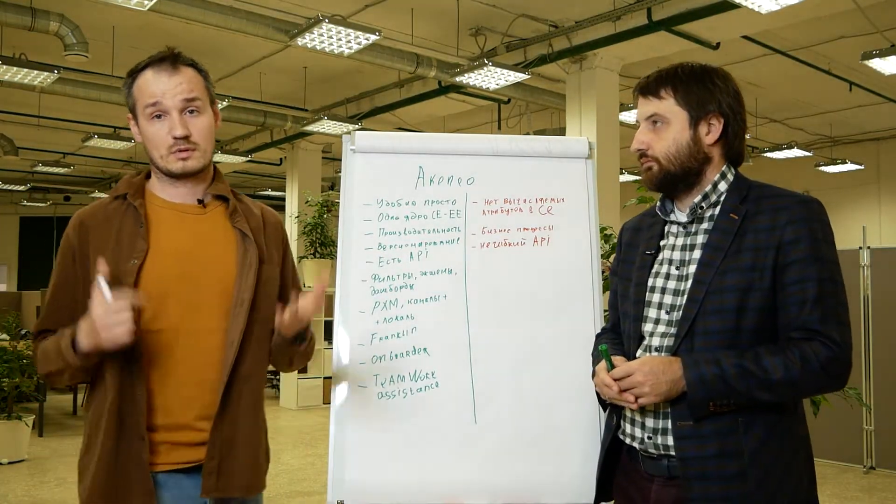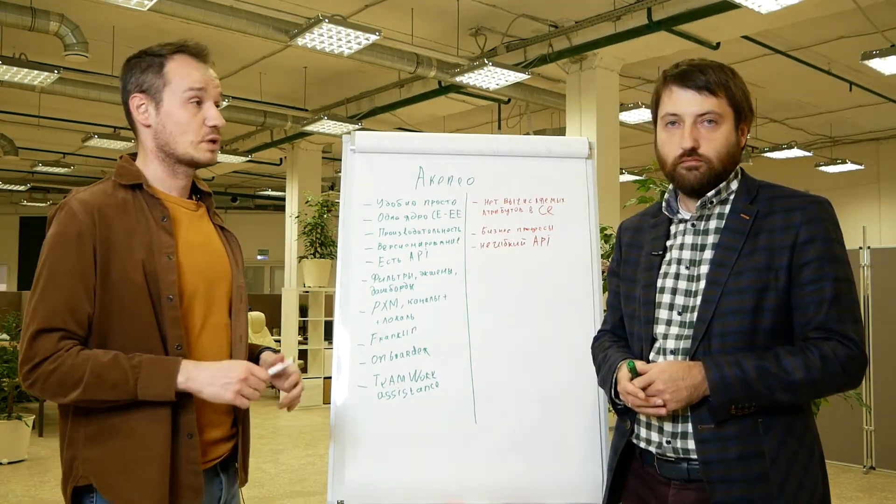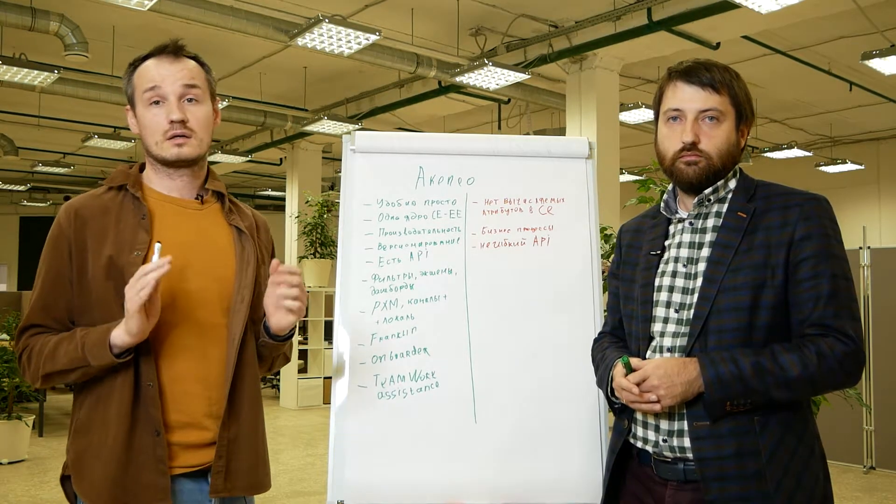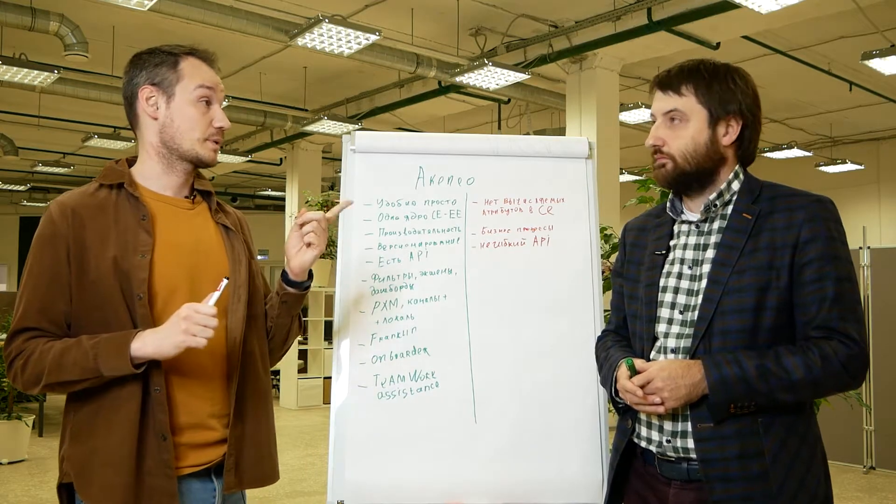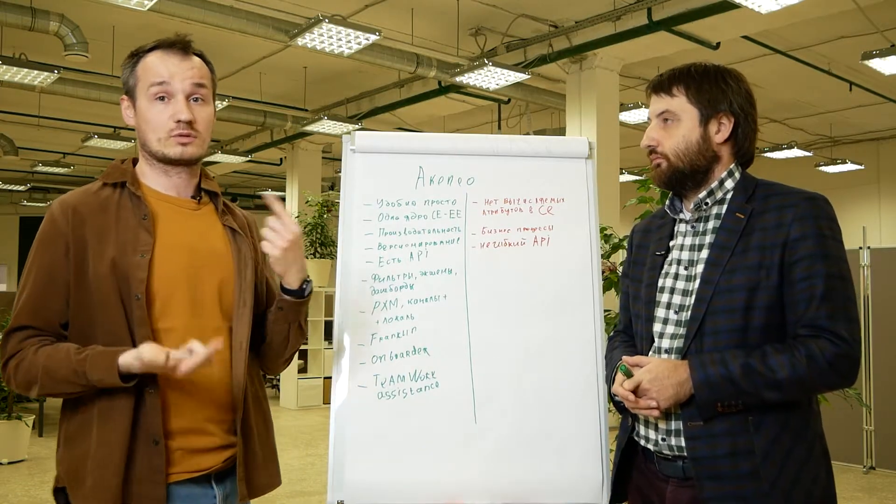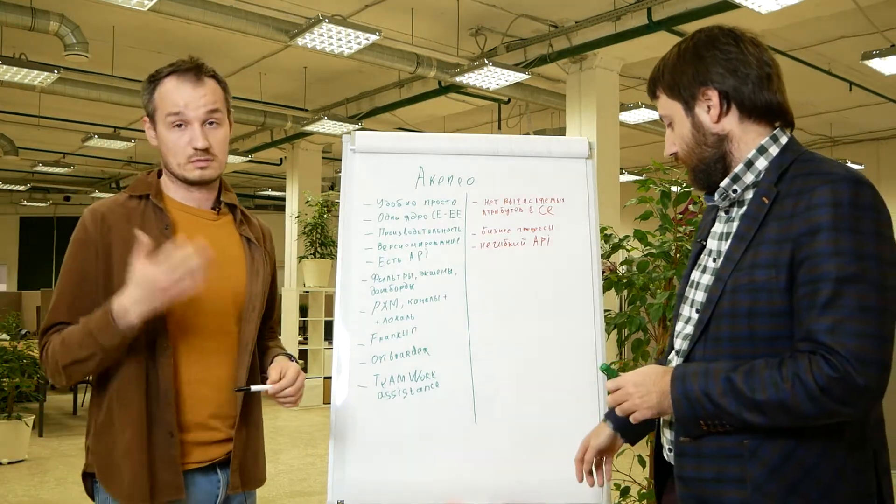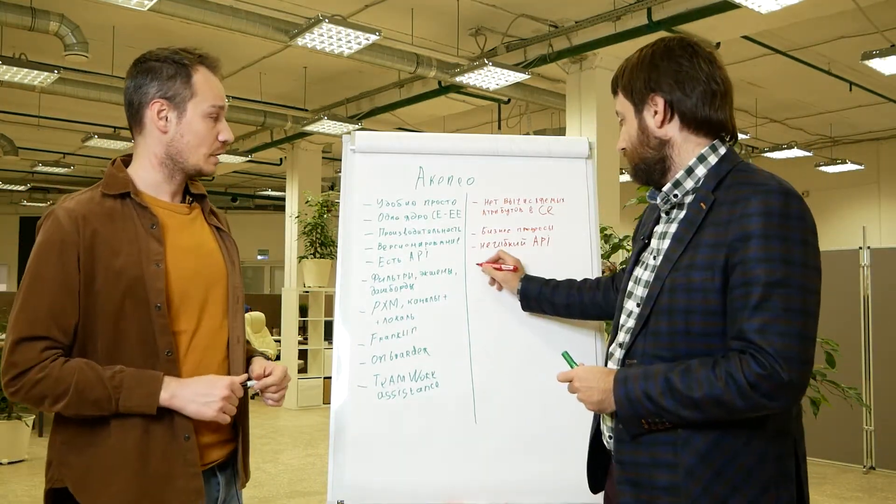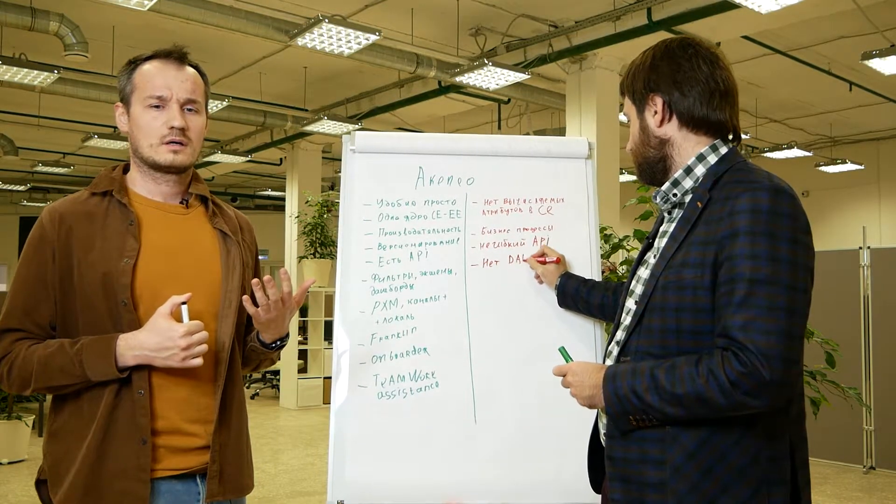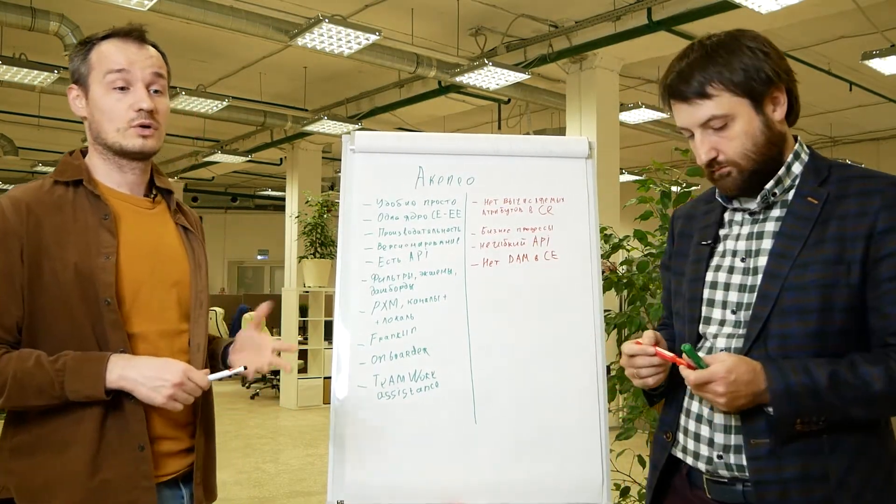Let's conclude. Akeneo Community and Akeneo Enterprise are actually the same systems with different modules. The biggest difference is the workflow. And we haven't told anything about DAM. Because just the enterprise can boast a digital asset manager, whereas the community cannot. And that's important. Well, it's more of a flaw. Sorry, we forgot, it is a flaw. Actually, it's quite strange that in a modern PIM system you do not have a DAM. But this is the case with Akeneo Community.